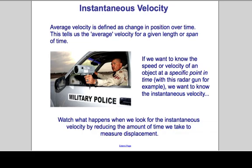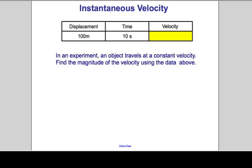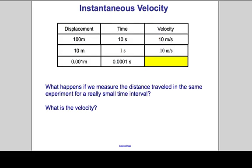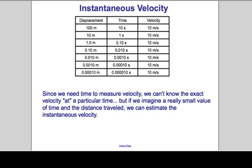We're going to measure displacements at various points in time. If we measure the displacement of 100 meters and it takes 10 seconds, we get 10 meters per second. If we measure the time required for 10 meters of displacement, it's still going to give us a velocity of 10 meters per second. If we measure the time required for an even smaller displacement — smaller displacements, smaller times — we get the same ratio. As this time becomes very small, we're finding the velocity at a point in time. So we can estimate the speed at instants in time by looking at it over very small time intervals.